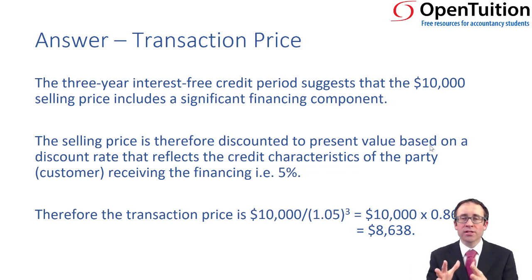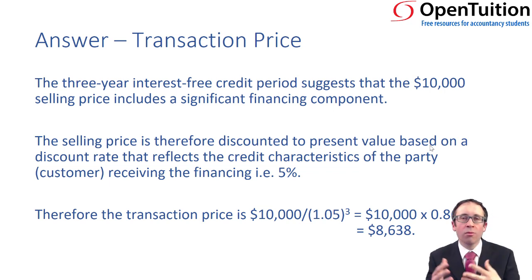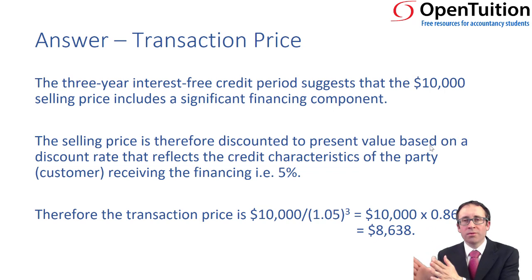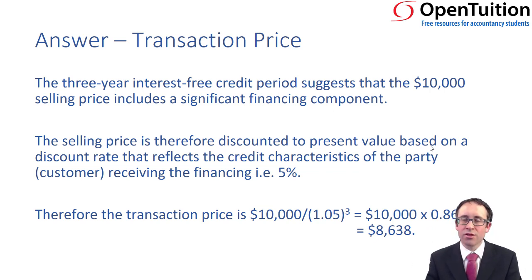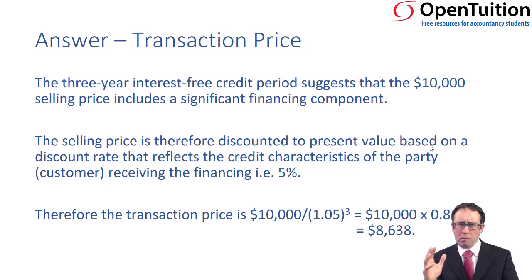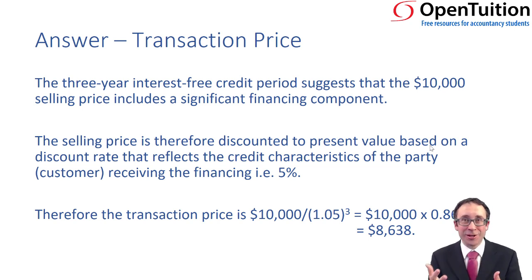$10,000 divided by 1.05 to the power of three — because it's three years and 5% is 0.05. That gives you a discount factor of 0.8638. Multiplying the discount factor by the $10,000 cash flow gives you a present value of $8,638. So the transaction price for the car is $8,638, and the remaining amount — approximately $1,362 — relates to the interest income.